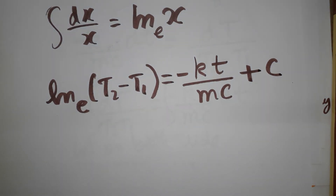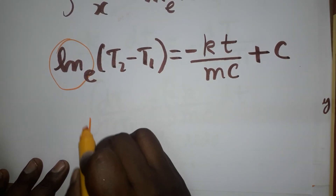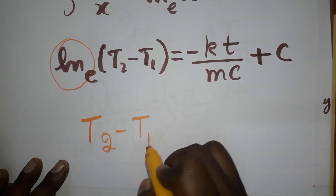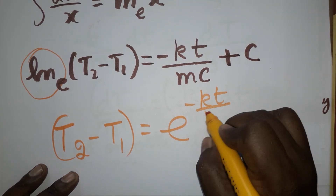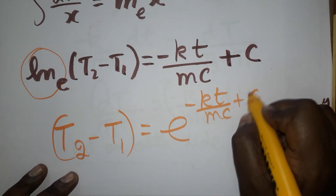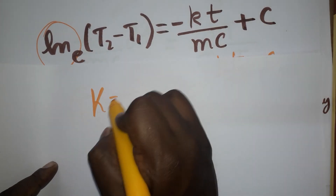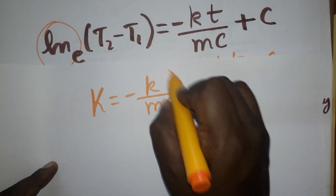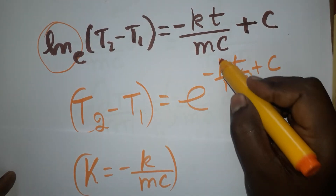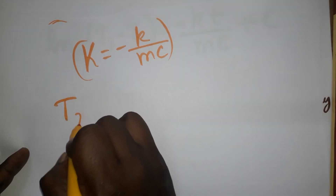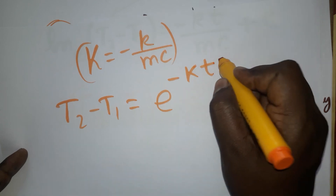To remove the ln on the left side, we write the right side as an exponential: T2 minus T1 equals e to the power of (minus k·t divided by m·c plus C). Now let capital K equal minus k divided by m·c, so T2 minus T1 equals e to the power of (minus K·t plus C).